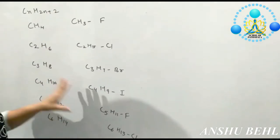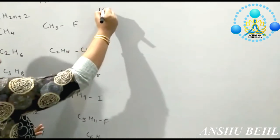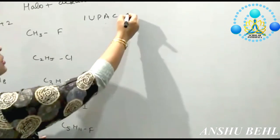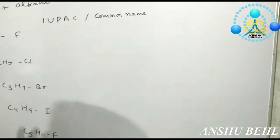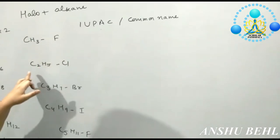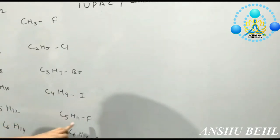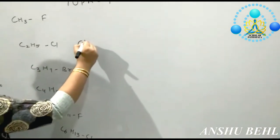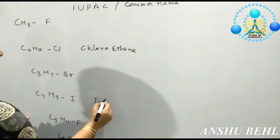Now, how to give them names? It can be given in two ways. One is the IUPAC system — that is International Union of Pure and Applied Chemistry — which has given certain rules to write. Another is the common name system. For the IUPAC name system, we write it as haloalkane: fluoromethane, chloroethane, bromopropane, iodobutane, fluoropentane, chlorohexane.